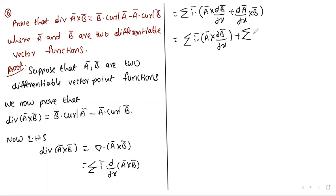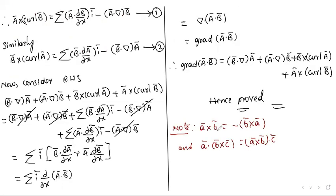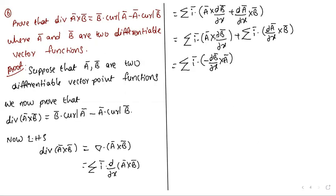Using the scalar triple product property Ā·(B̄ cross C̄) equals (Ā cross B̄)·C̄, and noting that Ā cross B̄ equals minus B̄ cross Ā: this becomes summation of i-bar·(∂Ā/∂x cross B̄) minus summation of i-bar·(∂B̄/∂x cross Ā).